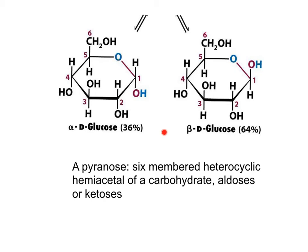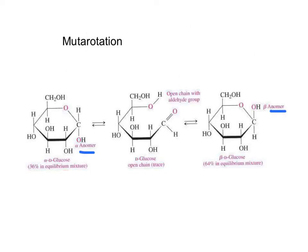The product is 36% of the time with the OH below the overall plane — the alpha-anomer — and 64% of the time with the OH above the overall plane — the beta-anomer. The interconversion between the alpha-anomer and beta-anomer is defined as mutarotation. It is the interconversion between the alpha-anomer that goes through the open chain to become the beta-anomer.